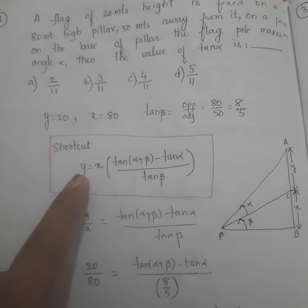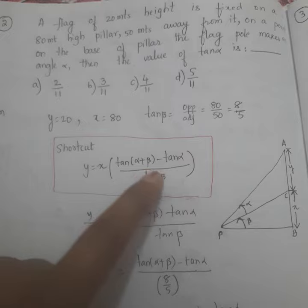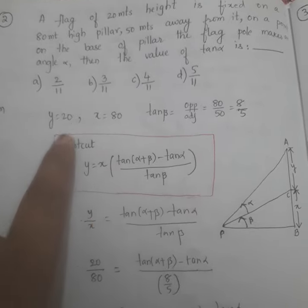Now, the shortcut to solve this problem is Y equals X times tan of alpha plus beta minus tan alpha, divided by tan beta.